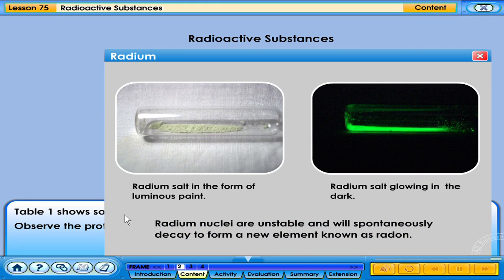Radium nuclei are unstable and will spontaneously decay to form a new element known as radon.